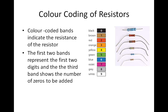Color-coded bands on a resistor indicate the resistance of the resistor. The first two bands represent the first two digits, and the third band shows the number of zeros to be added. A fourth band, if present, shows the tolerance or the error range of the resistor.